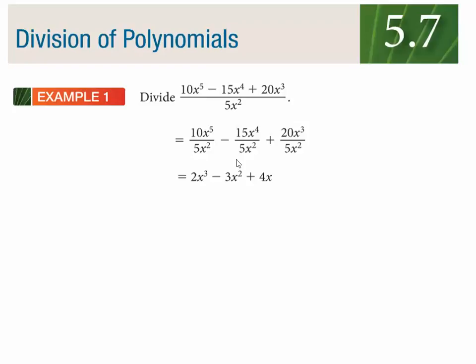So 15 divided by 5 is 3. x to the 4th divided by x squared is just x to the 2nd. And 20 divided by 5 is 4. And 3 subtract 2 makes 1.